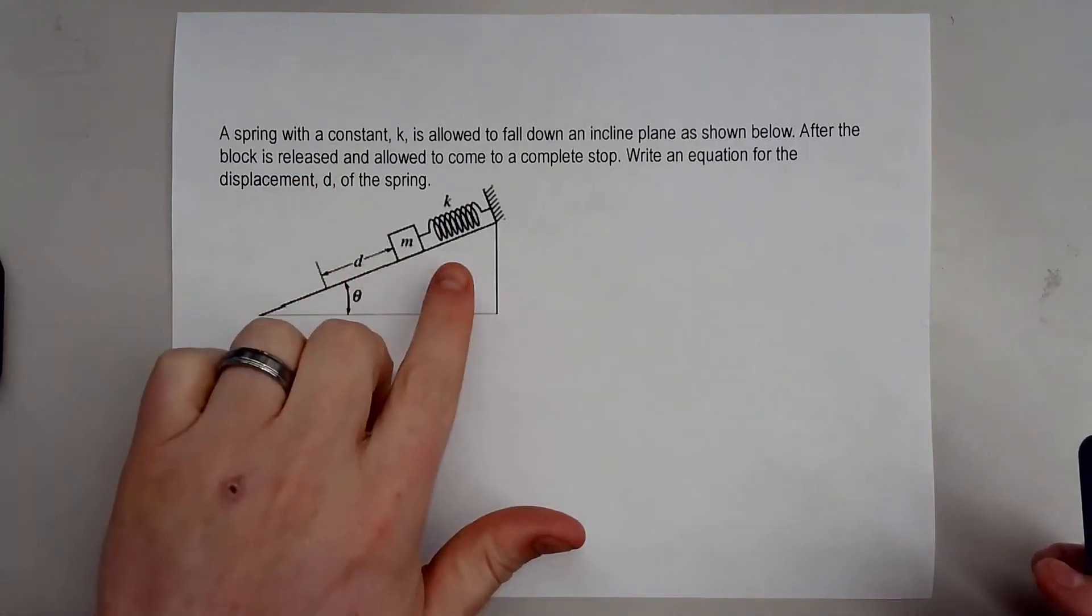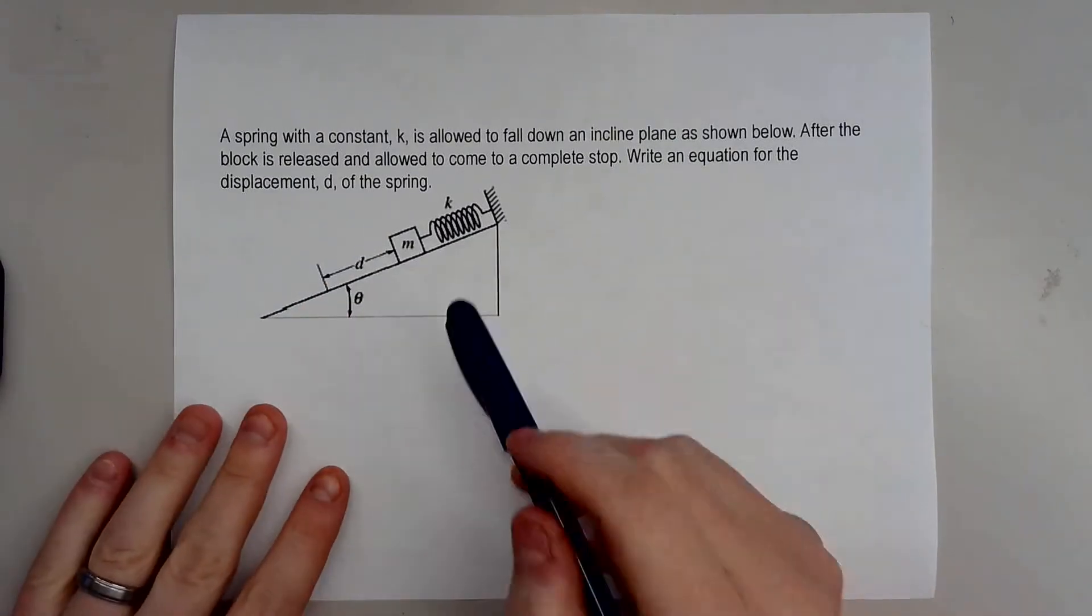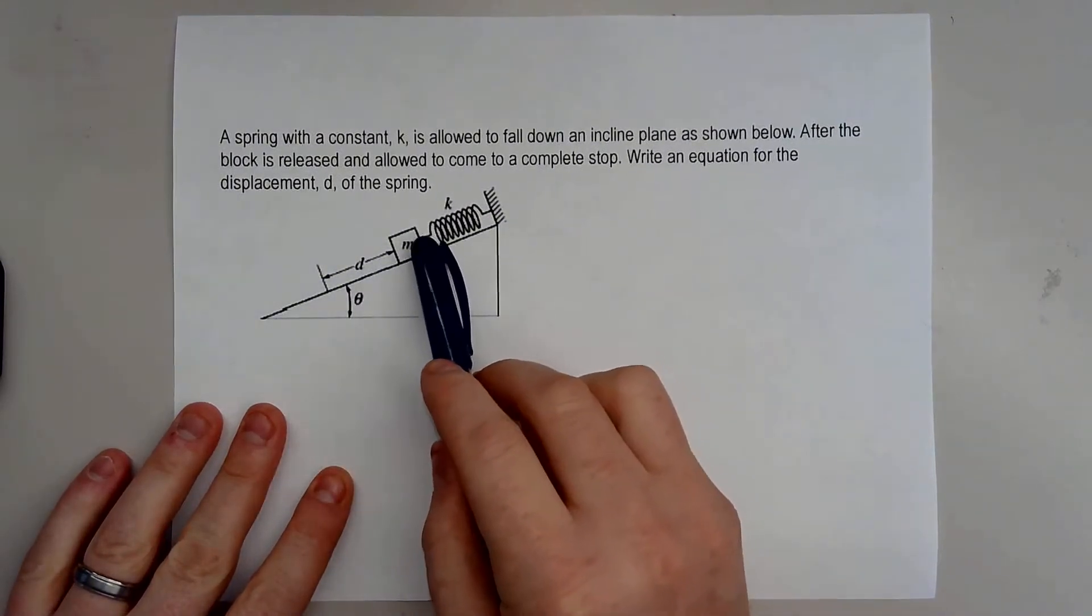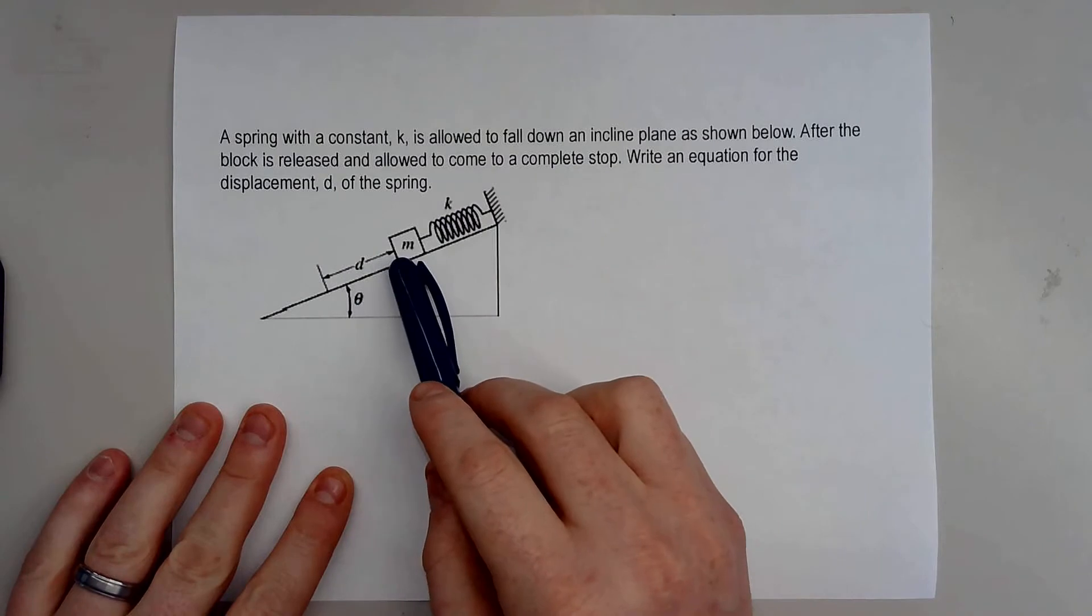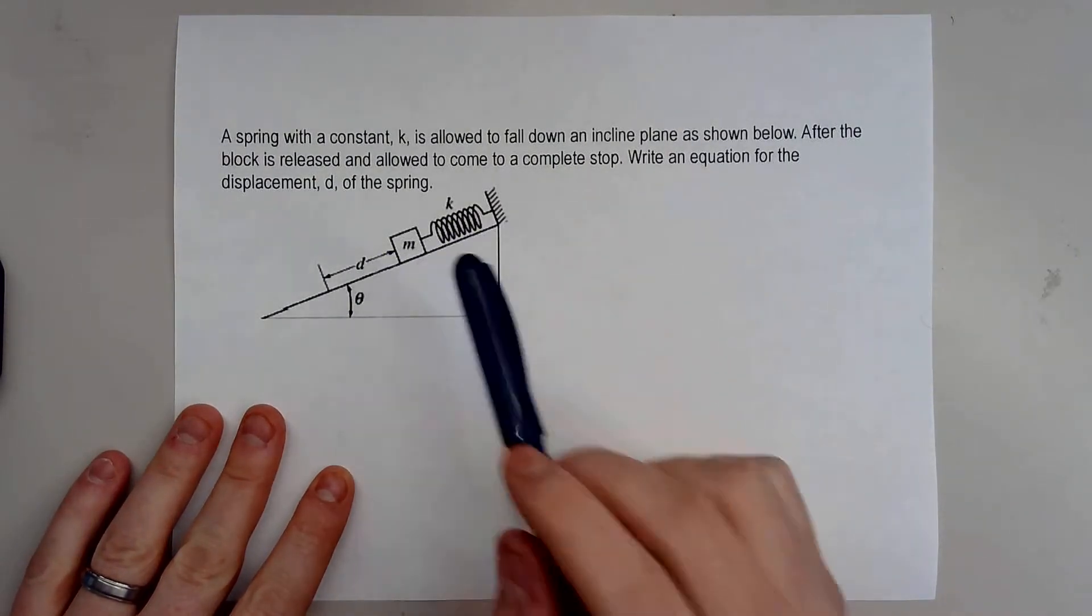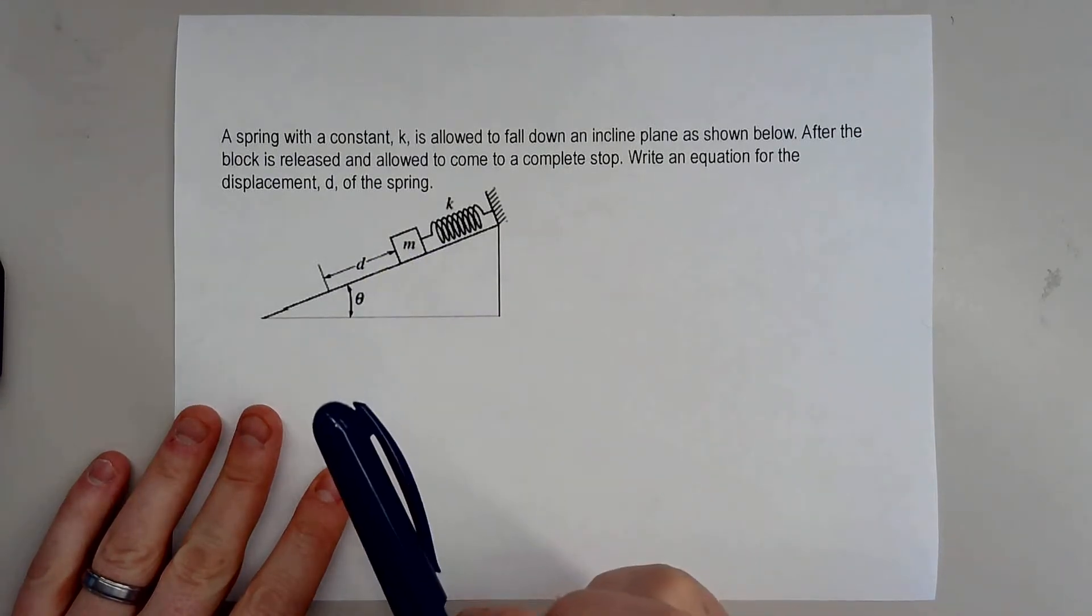A spring with a constant K is allowed to fall down an incline plane as shown below. After the block is released and allowed to come to a complete stop, the spring system is going to do something. It's going to fall down, it's going to displace itself, and then eventually the spring is going to stop. So the question is write an equation for the displacement D of the spring. So how far does the spring displace itself after it's come to a complete stop?